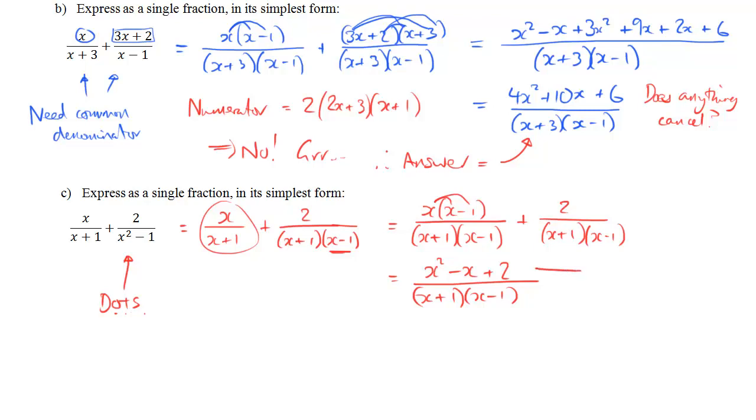And again, we want to look and see if I can factorize this and therefore cancel anything. And I can't. So this one doesn't factorize. Not a very nice example, I know. But if that had factorized, we could have canceled. As it is, that is our answer.